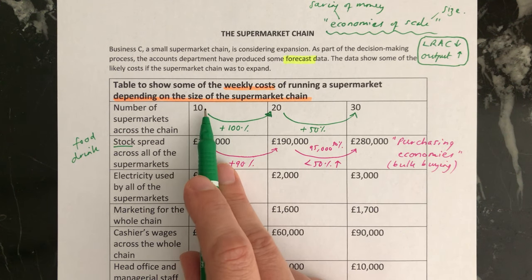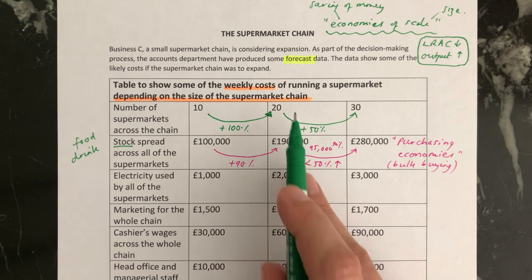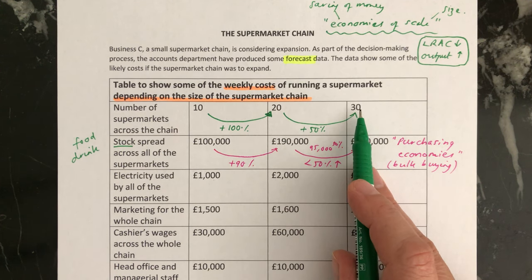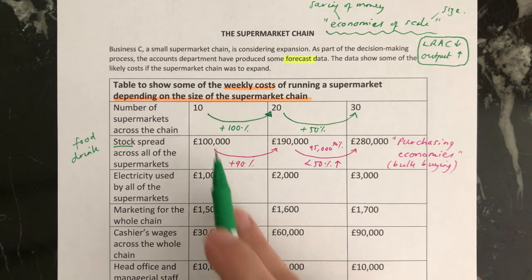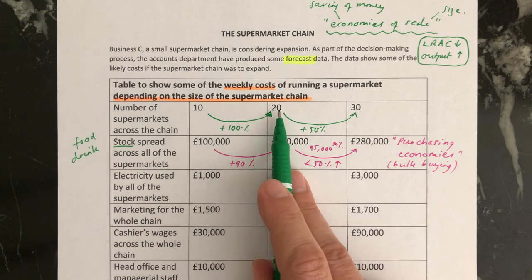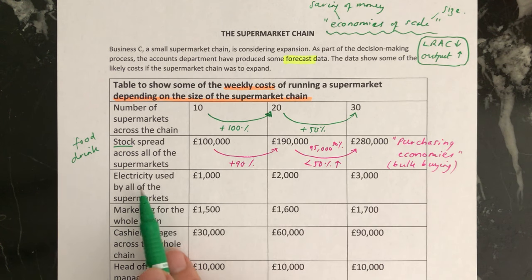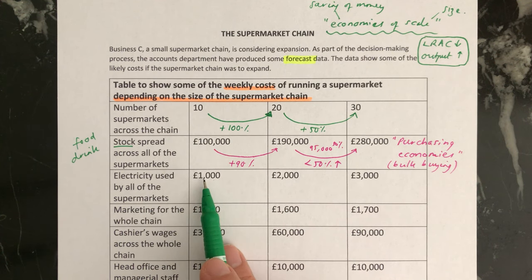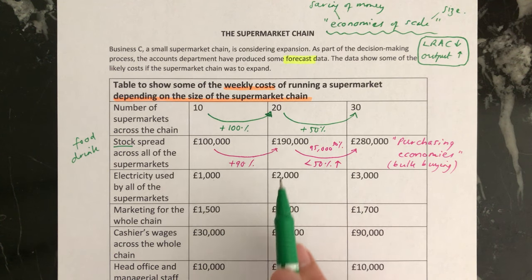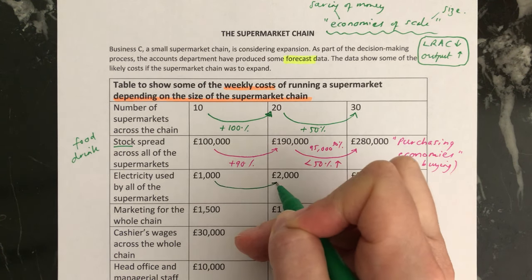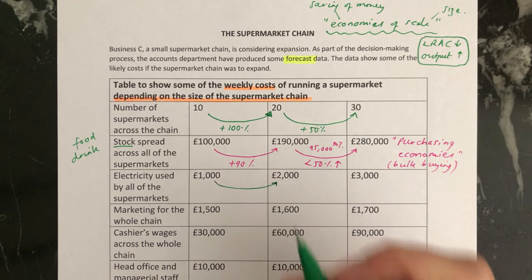The first scenario is where there are 10 shops in the chain, the second where there are 20 shops, and the third scenario where there are 30 shops. The increase from 10 to 20 shops is 100%, and from 20 to 30 it's 50%. If we look at the cost for electricity used by all of the supermarkets, if there are 10 shops this is going to be £1,000, and if there are 20 shops it's £2,000. We can see that this increase is the same as the increase in the number of shops.